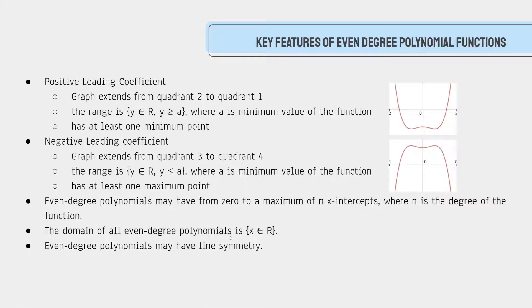Key features of even-degree polynomial functions. If they have a positive leading coefficient, the graph will extend from quadrant 2 to quadrant 1. The range would be y is an element of all real numbers where y is greater than or equal to a, where a is the minimum value of the function.